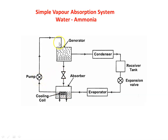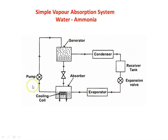If you compare the simple vapor absorption system with the vapor compression system, the condenser, receiver tank, expansion valve, and evaporator are common components. The compressor in the vapor compression system is replaced by three other components: the generator, absorber, and pump.